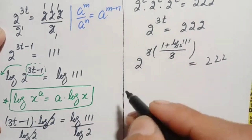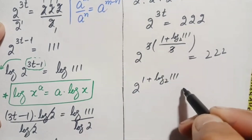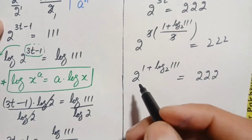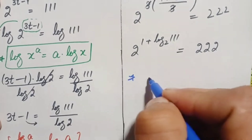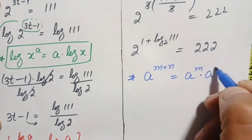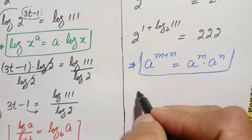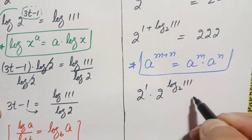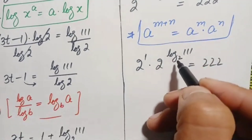After cancellation this becomes 2 raised to the power (1 plus log of 111 with base 2) equals 222. Using the exponential identity a^(m+n) equals a^m times a^n, we split the left hand side into 2 raised to the power 1 times 2 raised to the power log of 111 with base 2, which equals 222.